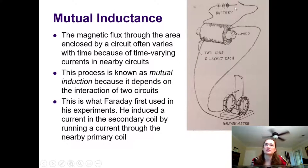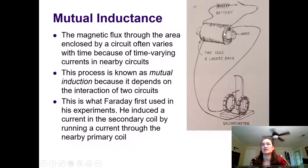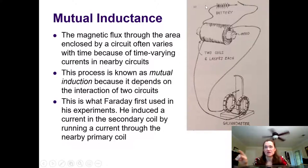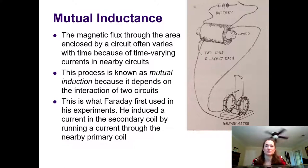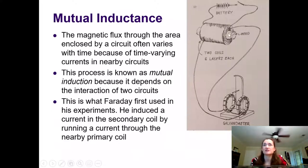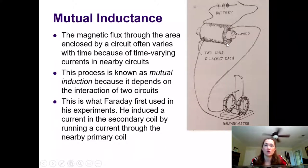He closed the switch on the battery, and that induced a current in the primary coil. The secondary coil wasn't hooked to the battery, but he noticed that it induced a current in the secondary coil briefly after the switch was closed, and then again when it was opened. The current went up and then stopped as the current in the primary coil was steady, then went the other direction when he opened the switch. What he was seeing was mutual induction — a changing flux through coil two when he opened and closed the switch, which induced a current in the secondary coil.